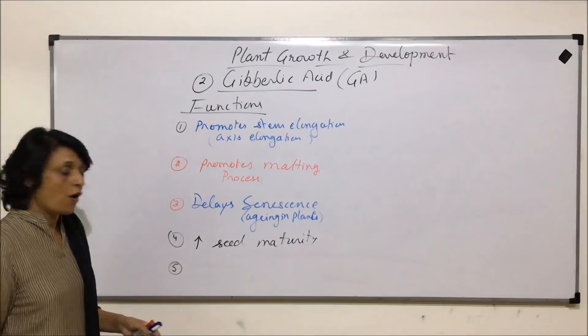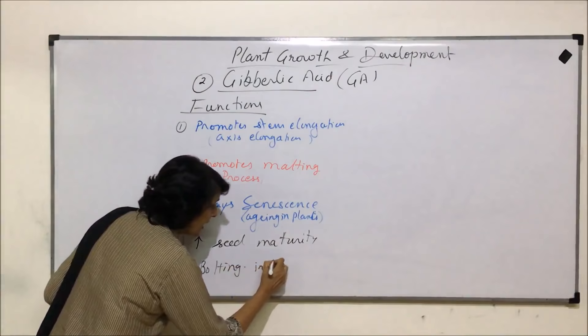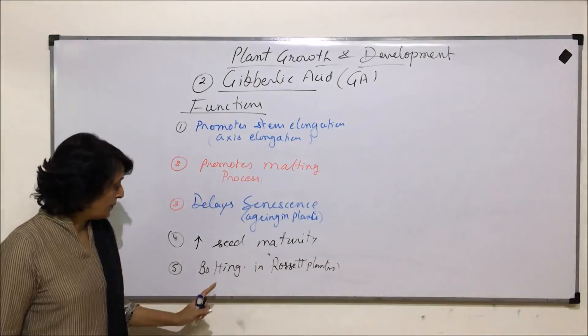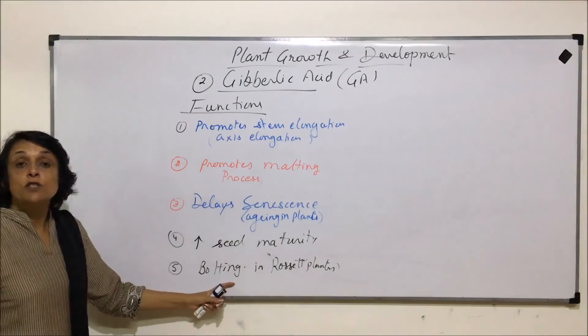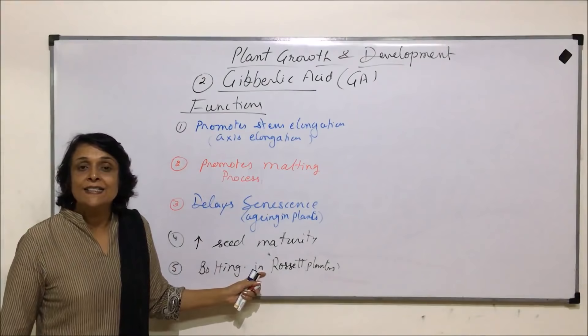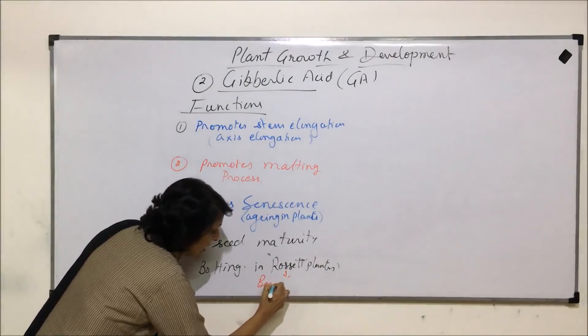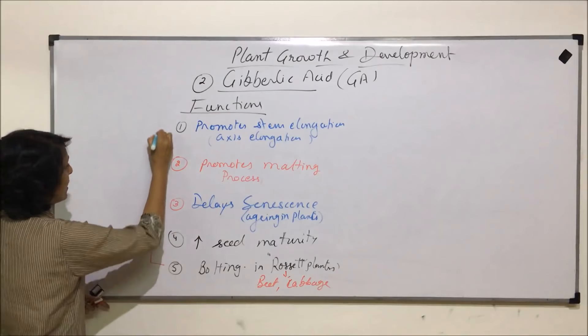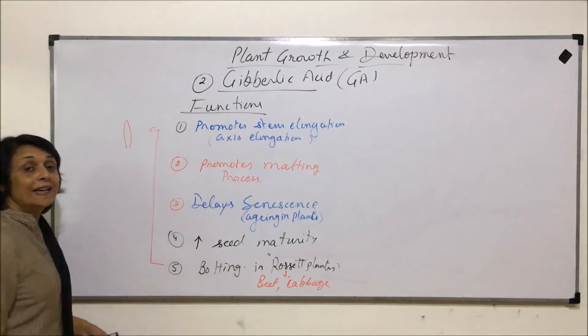One more function is bolting — it causes bolting in rosette plants. Bolting is basically inter-nodal elongation. Rosette plants have very short, compact internodes, meaning the leaves are very close together. Examples of rosette plants are beetroot and cabbage. If we draw the axis of cabbage, it shows the bolting phenomenon.